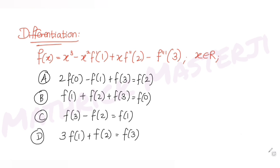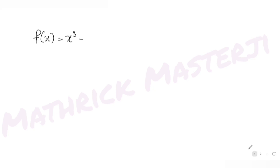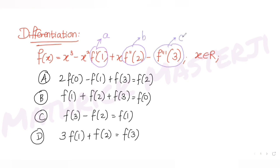Looking at f(x), f'(1) is a constant value — let's call it a. Similarly, f''(2) is a constant — let's call it b. And the third one, f'''(3), let's call it c.